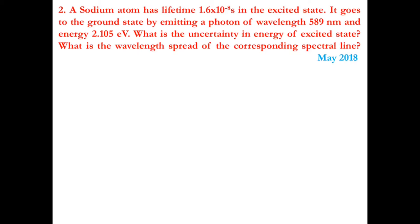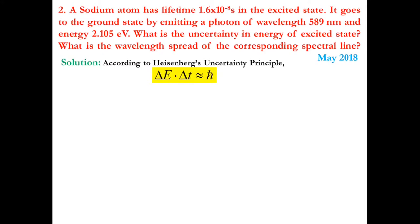We solve this using the energy-time Heisenberg uncertainty principle: ΔE · Δt ≈ ħ. This relation connects the uncertainty ΔE in the determination of energy of a system with the time interval Δt available for the energy determination. Rearranging, ΔE ≈ ħ/Δt.